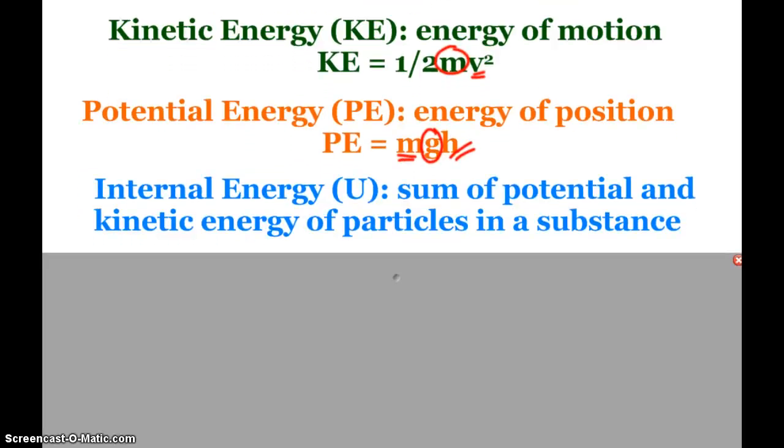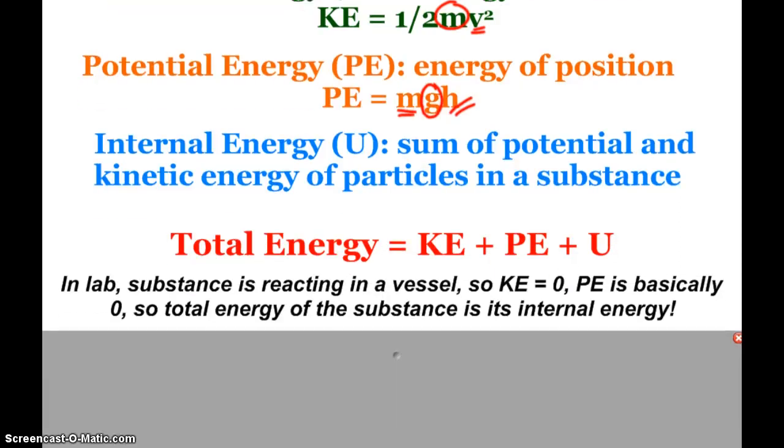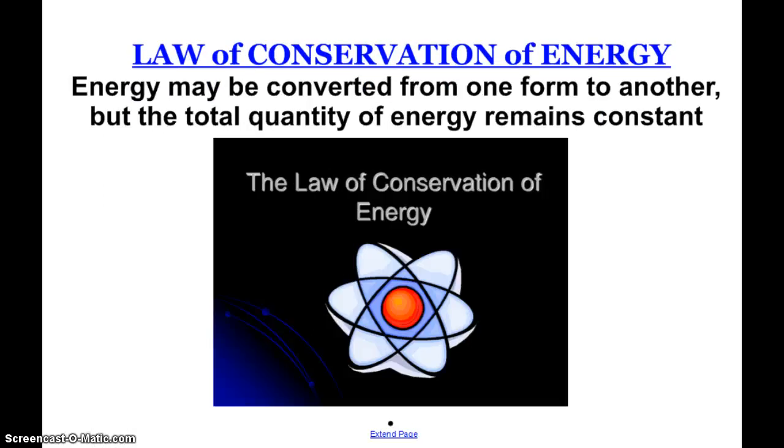In chemistry class, we're not too concerned about kinetic energy and potential energy. We're mostly focusing on the potential and kinetic energy of the particles in a substance—our internal energy. Total energy would be kinetic plus potential plus internal, but in lab, we're really just focusing on internal energy. We also have the law of conservation of energy, just like the law of conservation of mass. It says that energy can be converted from one form to another, but the total quantity of energy remains constant. That's a fundamental law that we abide by, and it'll show up in different forms throughout the year.